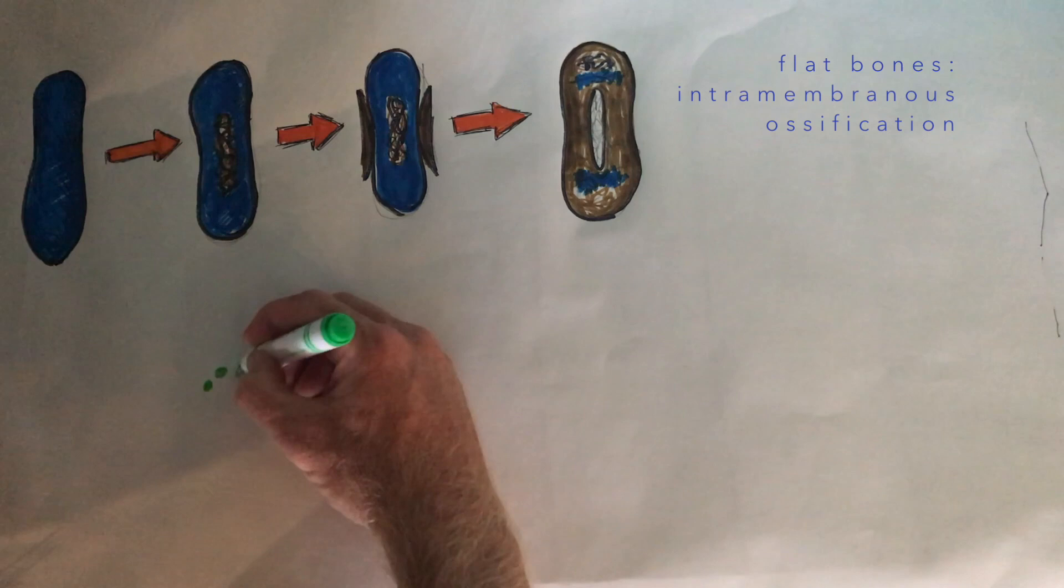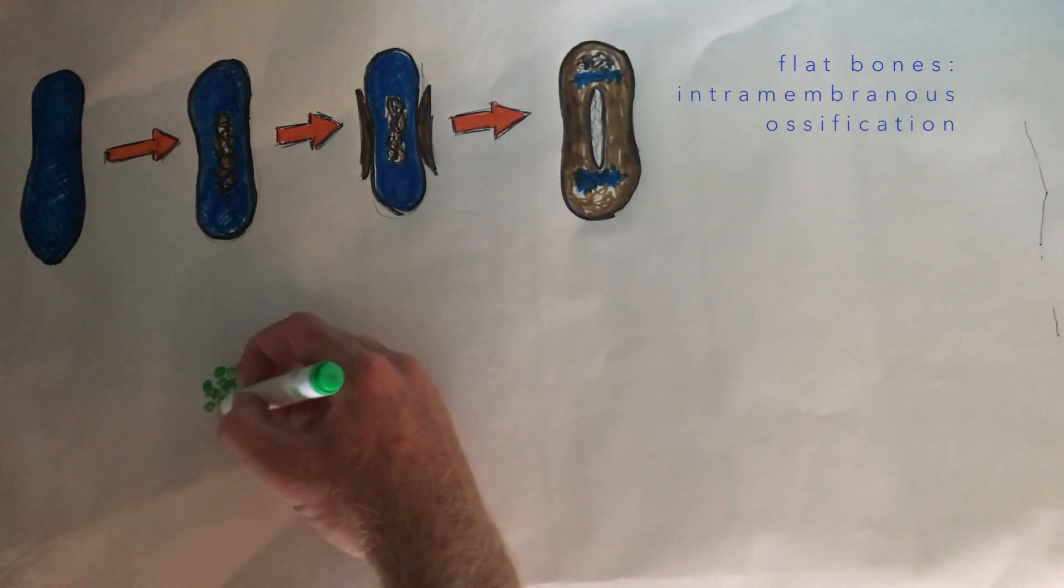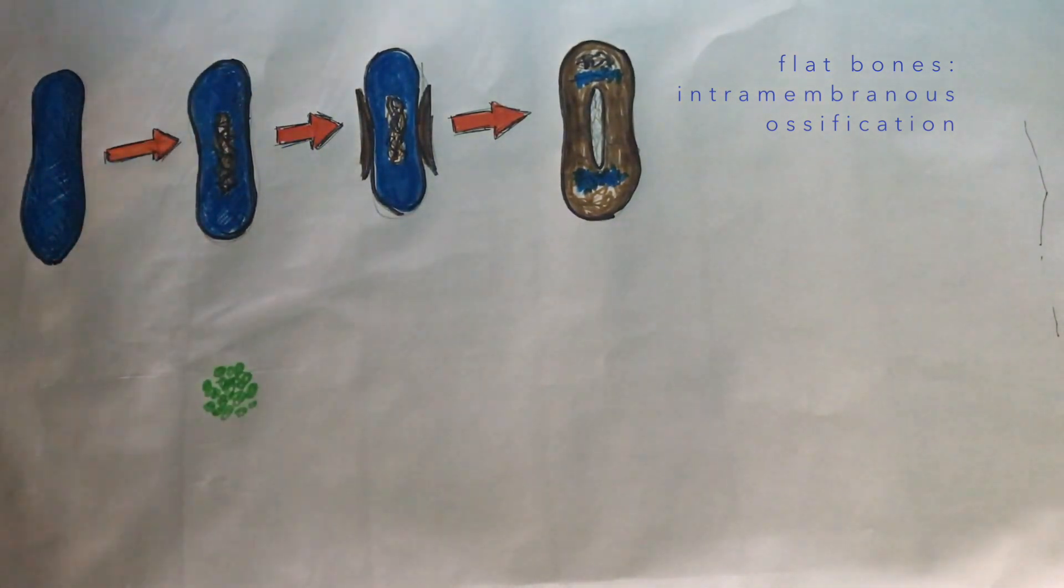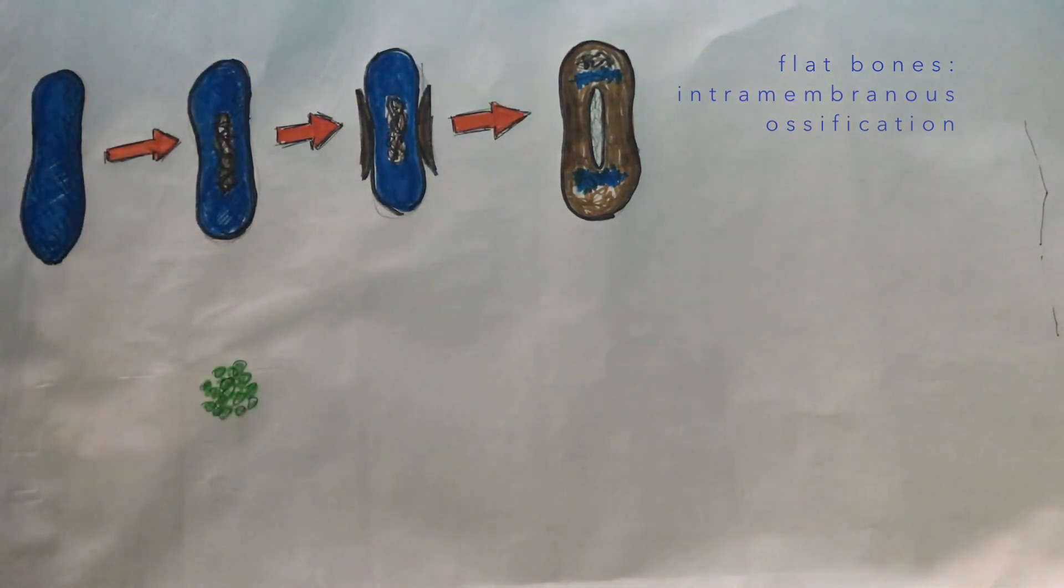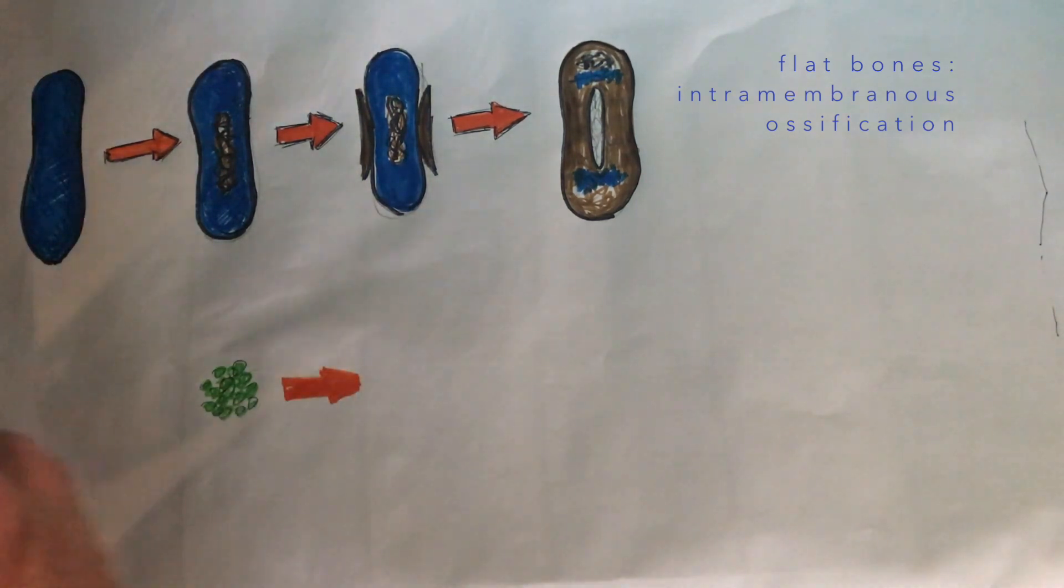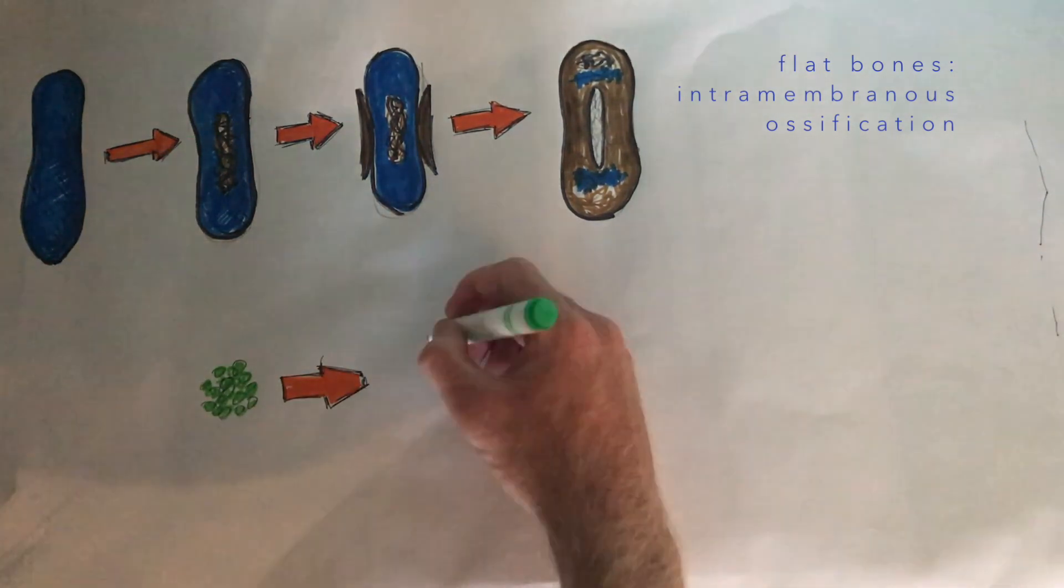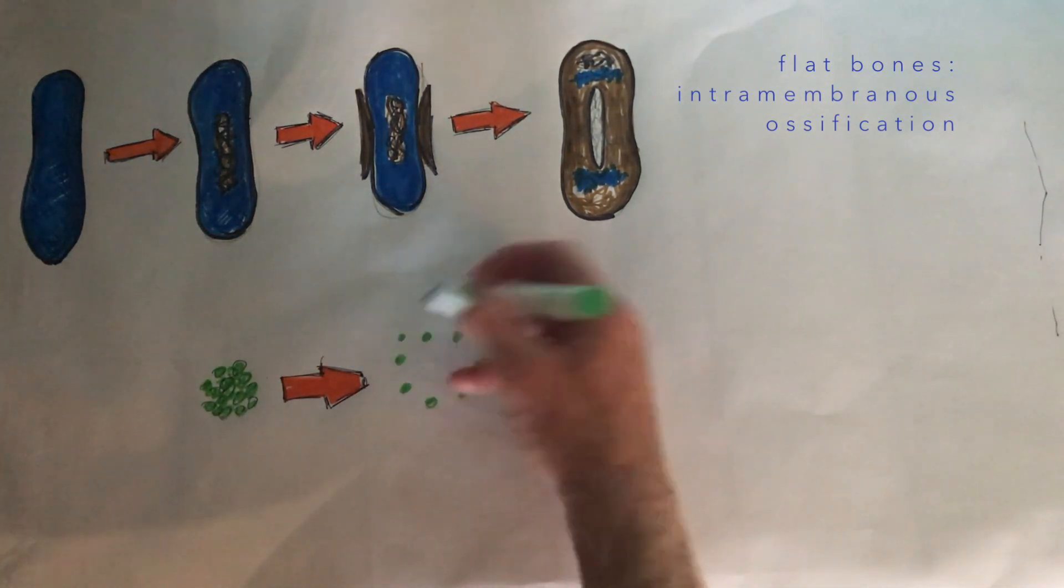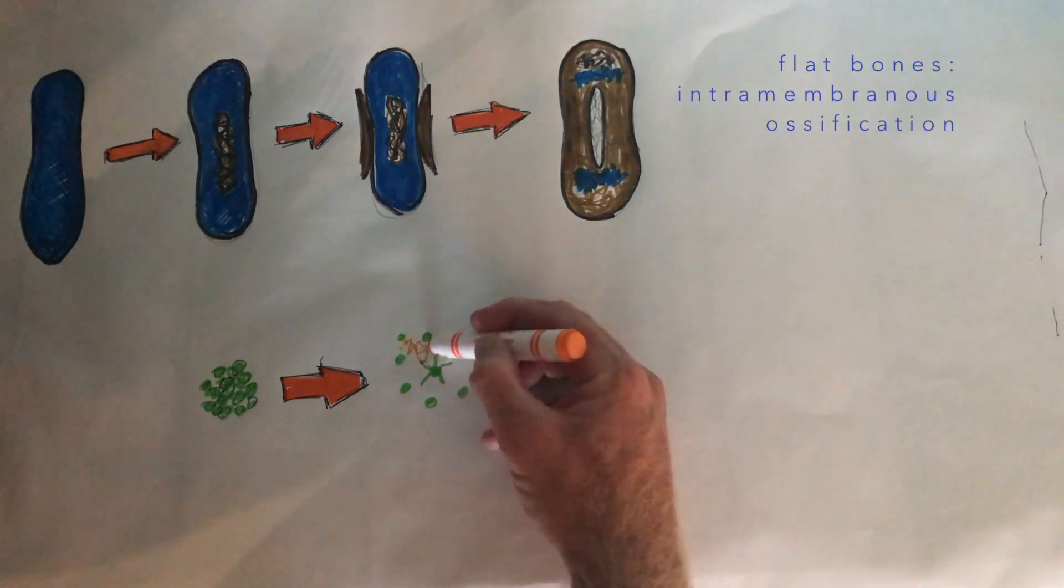The other type of bone development is called intramembranous ossification. This occurs only in flat bones like our scapula and the flat bones of our skull. In this case, you don't have this cartilage model. Instead, you have a group of osteoblasts located very close together, and these guys will start secreting all of that bone tissue—all that collagen, all those calcium phosphate crystals that create the osteoid, which is just another name for bone tissue.